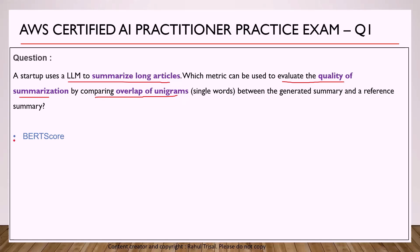Looking at the first option, BERT score — it is true that BERT score is used for any text-based evaluation such as summarization and translation. But BERT score uses semantic and contextual understanding to evaluate the generated and reference summary. It uses pre-trained BERT embeddings to calculate the cosine similarity between summaries. However, this question is talking about overlap of unigrams, which means word-to-word matching, and that is what BERT score does not do. So BERT score is the wrong option.